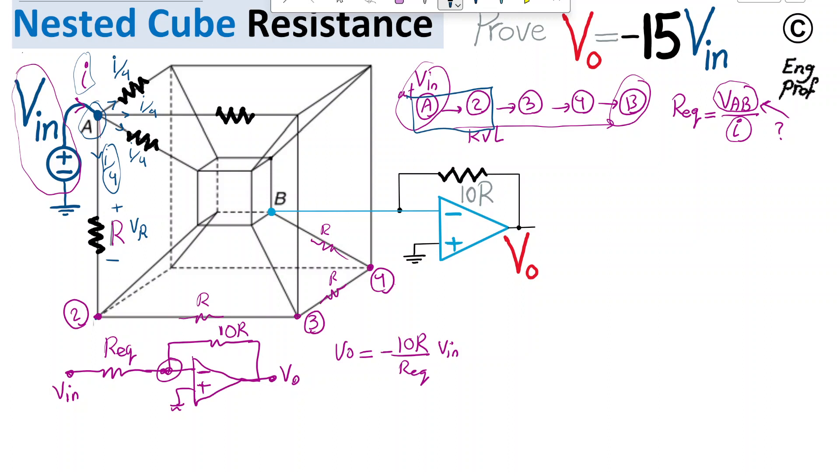From A to 2, if I write KVL or Kirchhoff voltage law, the sum of voltage drops, I have V-in minus the voltage drop, which is I divide by four times R. That accounts for the voltage drop across resistor R from node 1 to 2. Now we are at node 2.